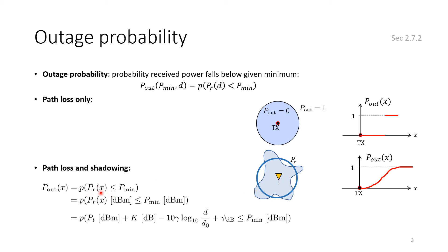The outage probability in this case equals the probability that the received power is less than or equal to a given minimum at distance d. You can use the dBm scale — it's the same equation. The received power model includes the shadowing term, and in dB the shadowing component is a Gaussian random variable. So how do we find this probability?